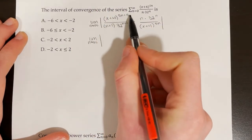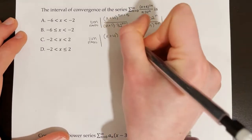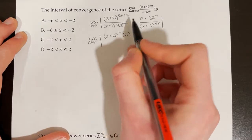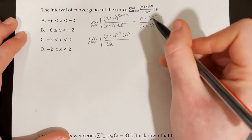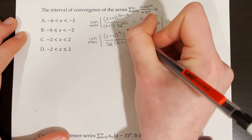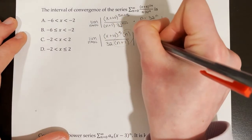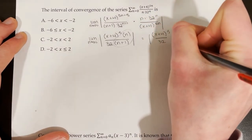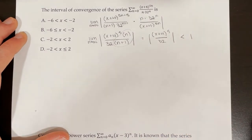Simplifying: x plus 4 to the power of 5n plus 5 over x plus 4 to the power of 5n — the 5n's cancel, leaving x plus 4 to the power of 5 in the numerator. We also have n in the numerator. For 32 to the power of n over 32 to the power of n plus 1, that leaves a 32 in the denominator, and n plus 1 remains in the denominator. Taking the limit as n approaches infinity, the n over n plus 1 portion approaches 1, so we're left with the absolute value of x plus 4 to the power of 5 over 32. For the series to converge, this expression must be less than 1.